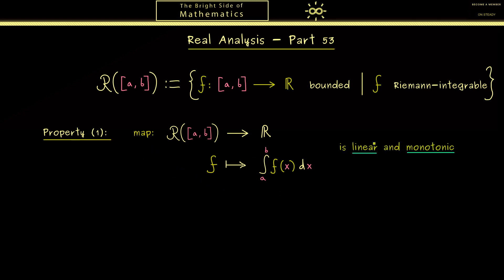More precisely, linear means for the integral that we can pull out the addition and scalar multiplications. Monotonic just means if we have two functions where one of them is always larger than the other one, then also the integral of this one is larger than the other one. In case you don't know this anymore, please re-watch part 50. There we have proven both properties here for step functions. Since we approximate Riemann integrable functions by step functions, these properties immediately translate to this general case here. This is just a short proof you can do for yourself.